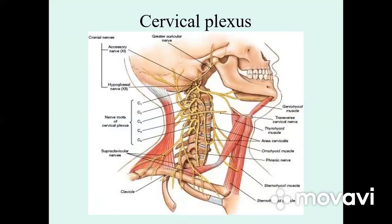The cutaneous branches are: first, the lesser occipital nerve, nervus occipitalis minor; second, the greater auricular nerve; third, the supraclavicular nerve, also sensorial; and fourth, the transverse cervical nerve. From the cervical plexus begin four sensorial nerves.